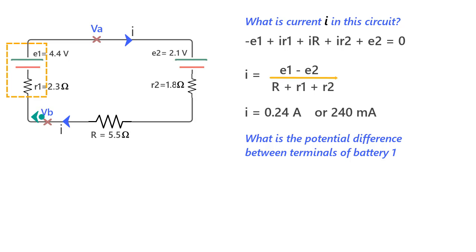So the equation we have, if we go around the loop is VB minus IR1 plus E1 equals VA, or VA minus VB equals minus IR1 plus E1. And if you put the respective values, what we get is VA minus VB equals 3.8 volts.